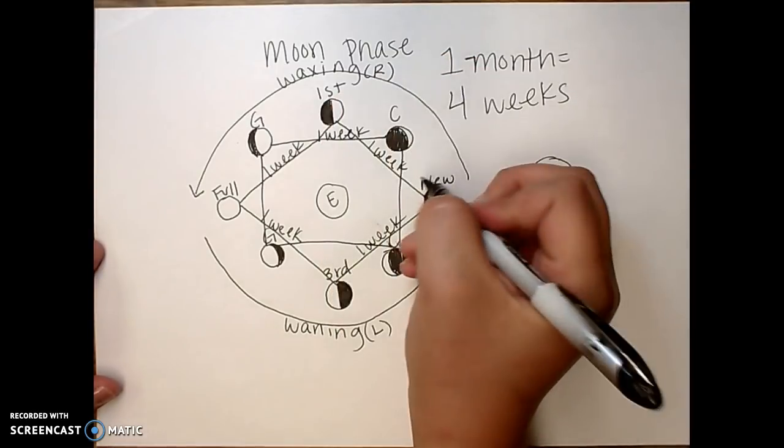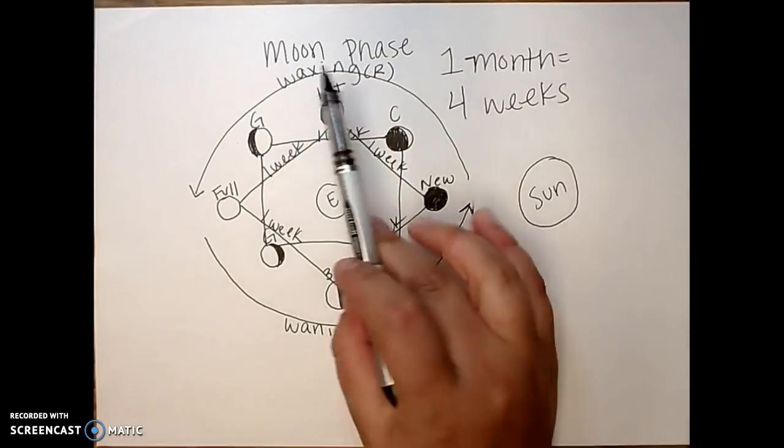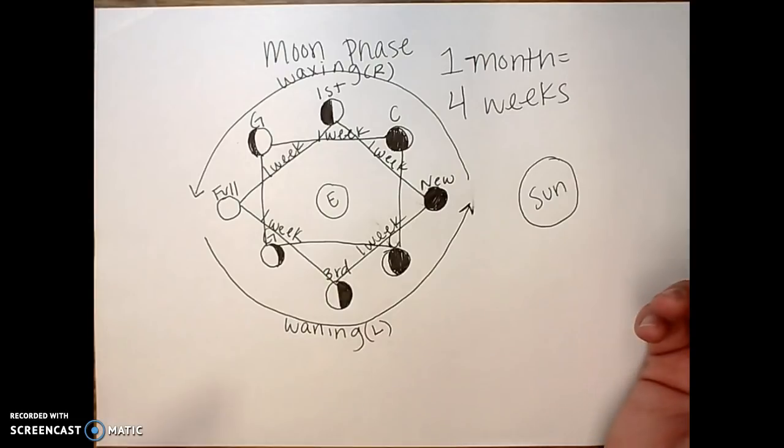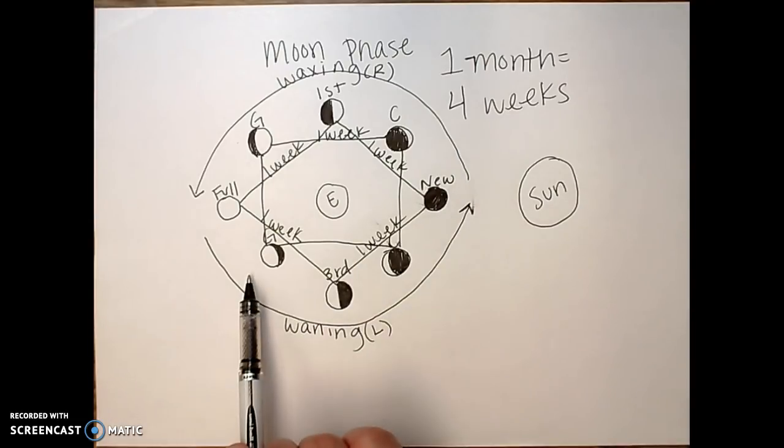So, I'm not going to fill all those in. But, from a waxing crescent, I know that in two weeks, it'll be a waning gibbous. And that's how we use this chart.